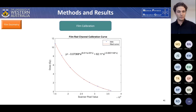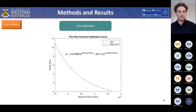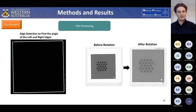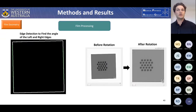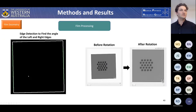The film calibration result for the red channel relates scanner pixel value to dose in Gray. A double exponential was fitted to the data points as shown on the graph. For film processing, to correct for the orientation in which films were scanned, MATLAB edge detection was used to find the angle of the left and right edges, and an image rotation algorithm was applied to rotate the films so they were square.